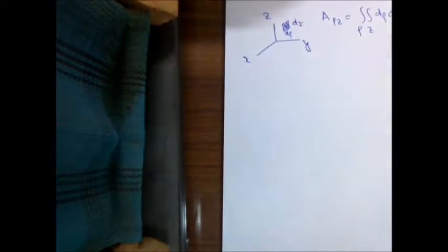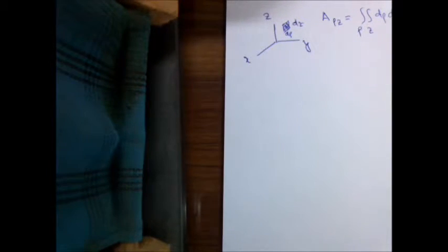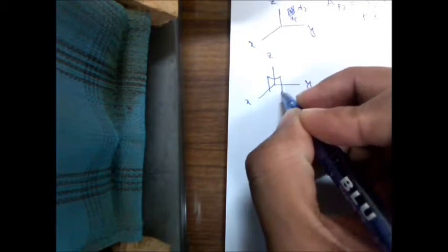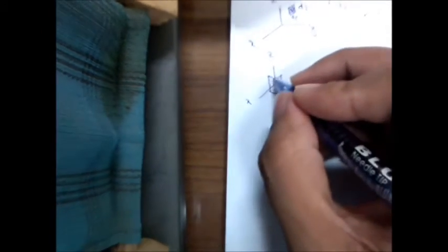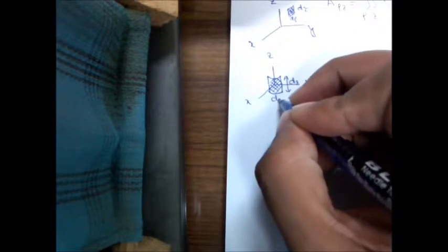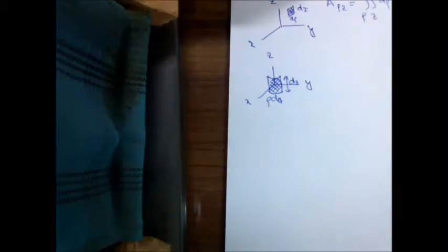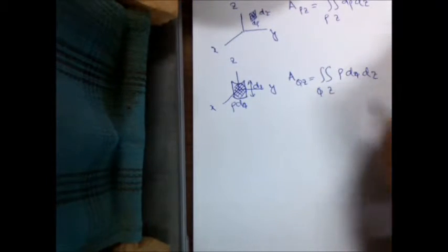The third surface area is in the phi-z plane. In the phi-z plane, the incremental area has dz along the z axis and rho d phi along the phi direction. This gives the surface area of the outer surface of the cylinder. The area in the phi-z plane can be written as the integral of rho d phi dz over all the given values of phi and z.